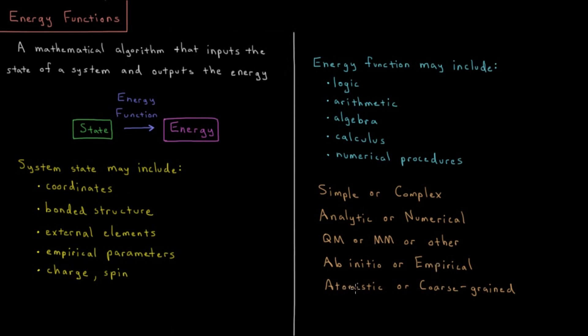They could be atomistic, where you model every single atom, you could model every single electron, or that might be too much information. You might want to do a more coarse-grained model, where maybe instead of every atom, every amino acid residue, maybe every nucleic acid base, maybe every 10 bases are a single particle when you're doing things that are more coarse-grained.